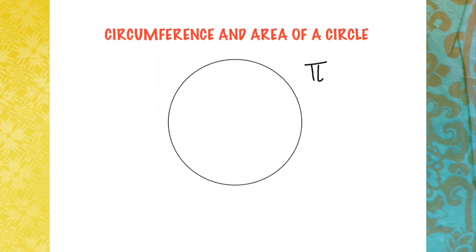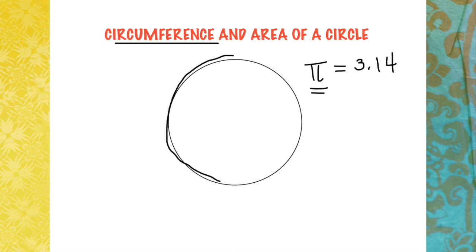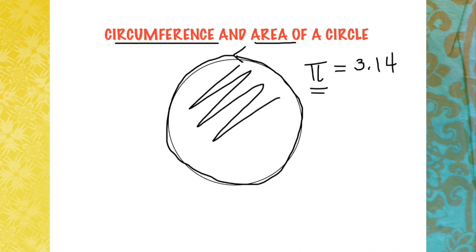For this video, we will use either 3.14 as a value of pi or the pi found in your scientific calculator. The next term is circumference — the enclosing boundary of a circle, or basically the distance around your circle. The next term is area — the enclosed space inside your circle.